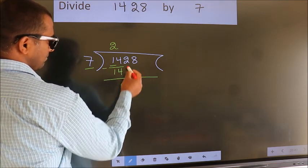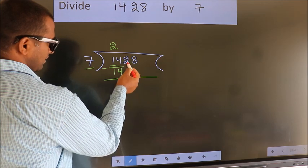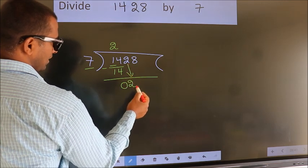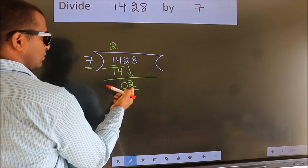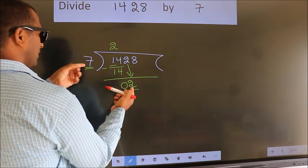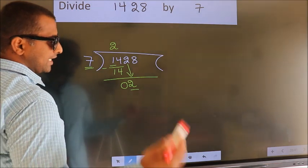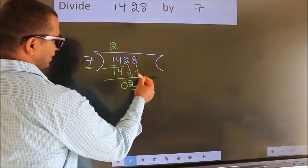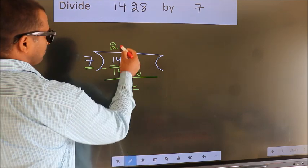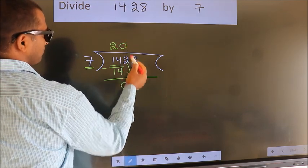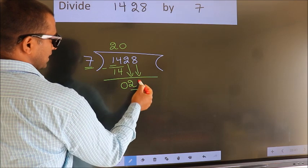After this, bring down the next number, so 2 comes down. Here we have 2, here 7. 2 is smaller than 7, so we should bring down the next number. The rule is to put 0 here first. Then we can bring down this number.